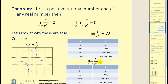For the second limit, as x approaches negative infinity, starting at negative one and decreasing to negative one thousand, you can quickly see that the y values are approaching zero, this time from the negative side, but still approaching zero. Graphically, as we approach negative infinity, we would be moving to the left, and again you can see that the y values are approaching zero, but from the negative side this time.